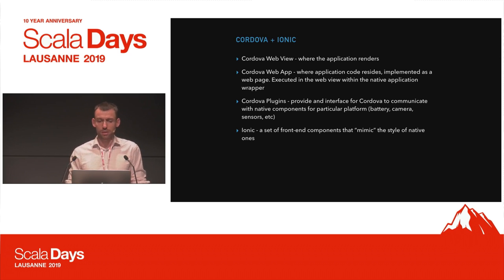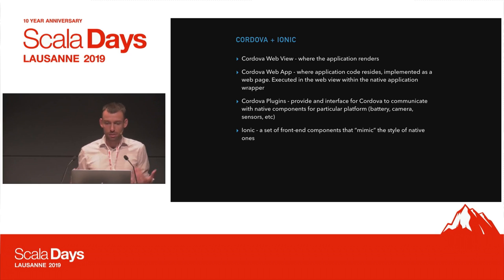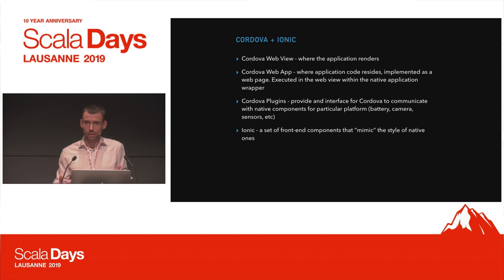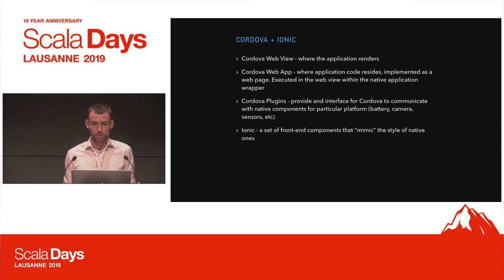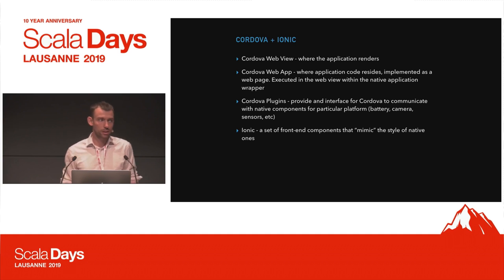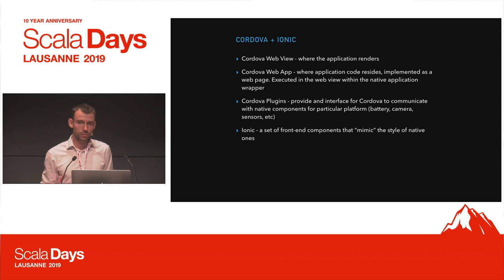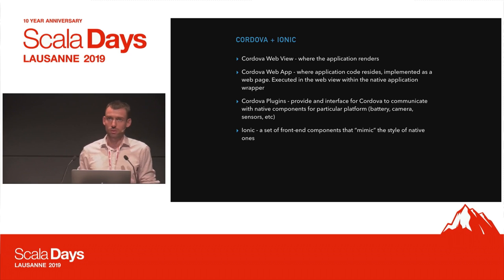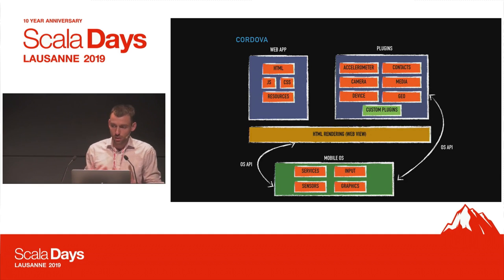A common combination in this space is Cordova plus Ionic. A Cordova-based application is made up of the Cordova web view — sort of like a web browser in disguise — where the application actually renders. Then you have the web app containing all your JavaScript logic, assets, HTML, and CSS. Cordova plugins hook into the native functionality of the underlying platform, so you can access things like camera sensors and whatnot.